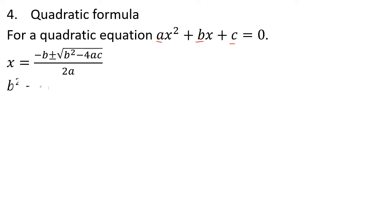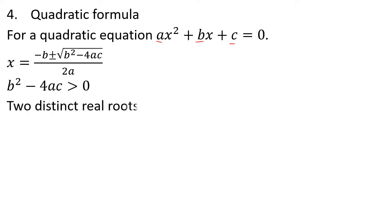In the expression b squared minus 4ac: if the root of b squared minus 4ac is greater than 0, we get 2 distinct real roots.